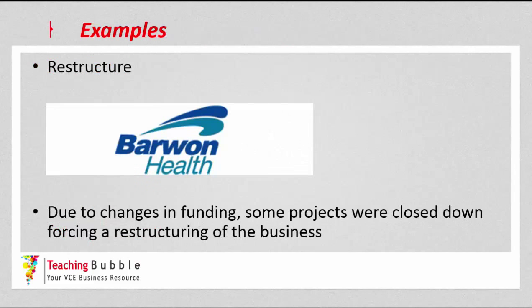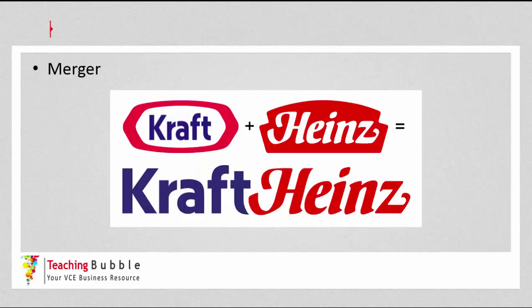For example, a transformational change is a restructure. Barwon Health, due to changes in funding, had some projects closed down, forcing a restructure where smaller departments actually closed due to that government funding pressure. Another transformational change is a merger — Kraft and Heinz were two separate companies that joined together to form Kraft Heinz, which is two separate organisations forming one new organisation.